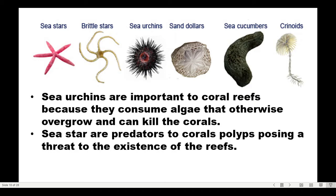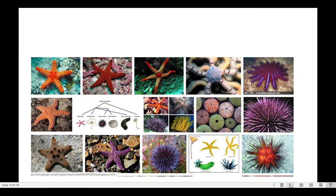Unique to echinoderms is the presence of water-filled tubes that spread out to form tube feet. Tube feet are used for getting food, moving around, and gas exchange. Sea urchins are important to coral reefs because they consume algae that would otherwise overgrow and kill the corals. Sea stars, however, are predators to corals, posing a threat in large amounts. Overall, they still play a role in the marine environment.